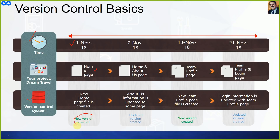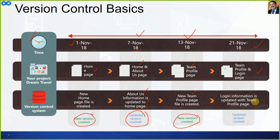On November 7th, an About Us page is added and the home page is updated, so an updated version is created. On November 13th, a team profile page is created and linked to the home page, creating another new version. This process continues — new versions are created every time anything on the page is updated. That is the concept of version control.